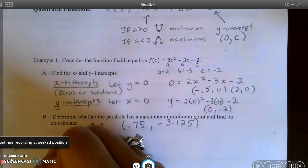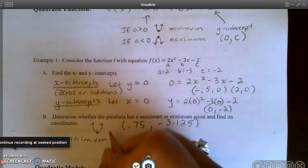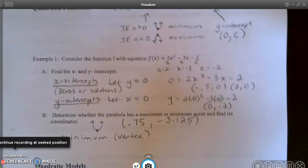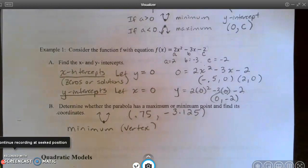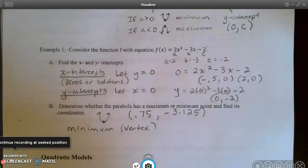I did ask whether it was a minimum or maximum. So it was a minimum. Another name for it in general is it's the vertex. Whether it's a minimum or a maximum, it's the vertex. So we have the minimum value is 0.75, -3.125. Now what if we didn't have a calculator, and we had to figure it out without a calculator?